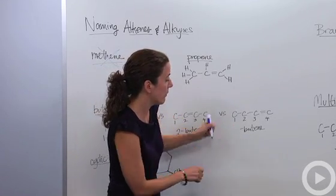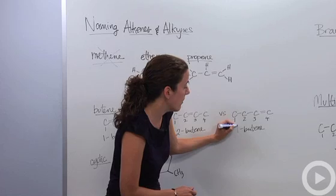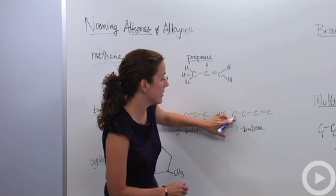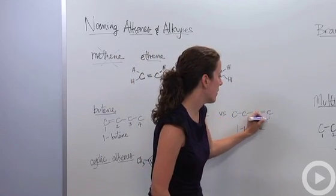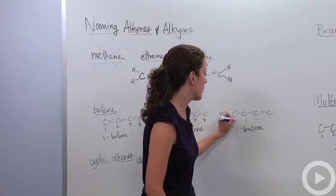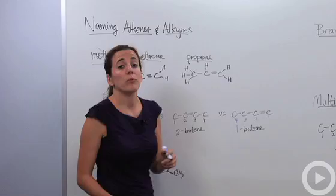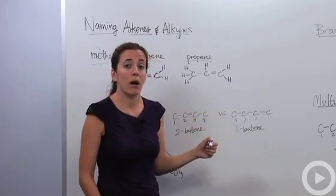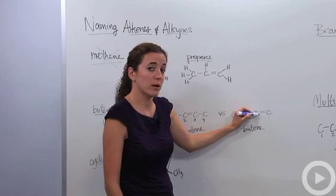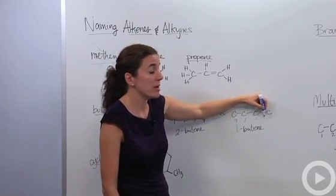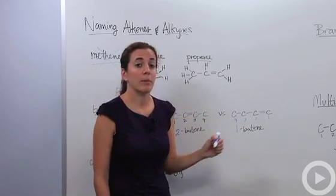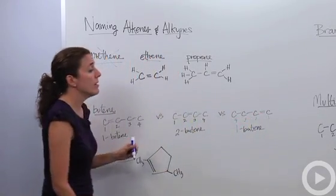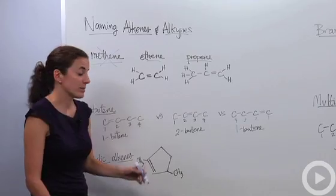So we renumber it to make the first carbon the starting point, and you'll notice it's actually the same thing. You're going to want the double bond at the lowest carbon number. So you have to renumber to make sure that double bond is between the lowest numbered carbons. We'll get into this in more detail with practice problems.